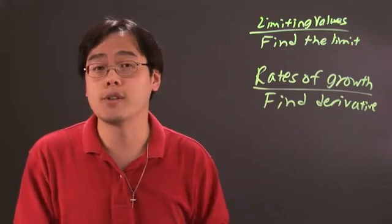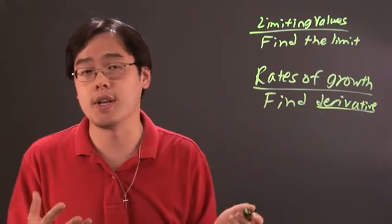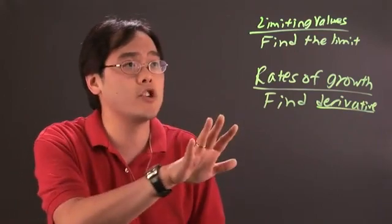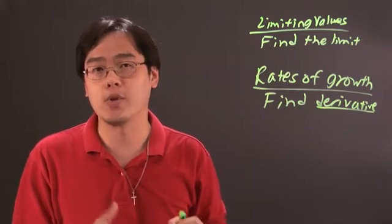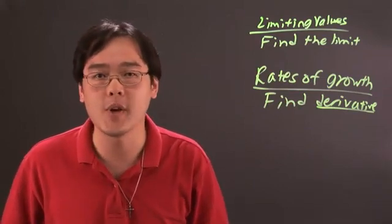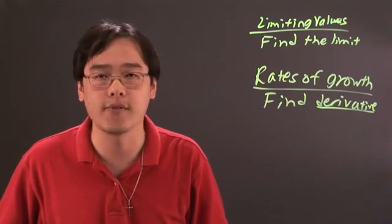growth is a form of change and so when you're finding the rate of change, you're finding the derivative because that's what the definition is. So depending on the function, these are simply code words for what the actual calculus operation is supposed to be. So I'm Jimmy Chang and that's a brief general strategy on finding limiting values and rates of growth.